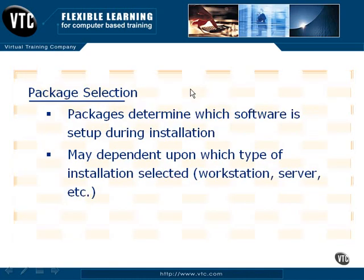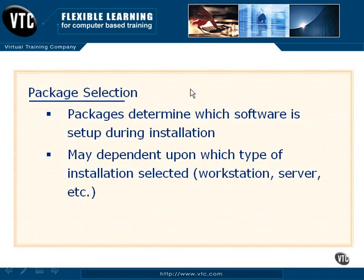Once we've got that squared away, we're ready to start selecting our packages. Packages, similar to what we discussed before, are basically groupings of files that allow some level of functionality, commonly called a software package or a set of software. Depending on what you're going to be using your particular machine for, there are various package options. If you're choosing a pre-selected installation option, other than custom or upgrade, then you're allowing Linux to choose your packages for you. Depending on whether it's workstation, laptop, or any of those options, you're going to get a pre-canned set of packages.